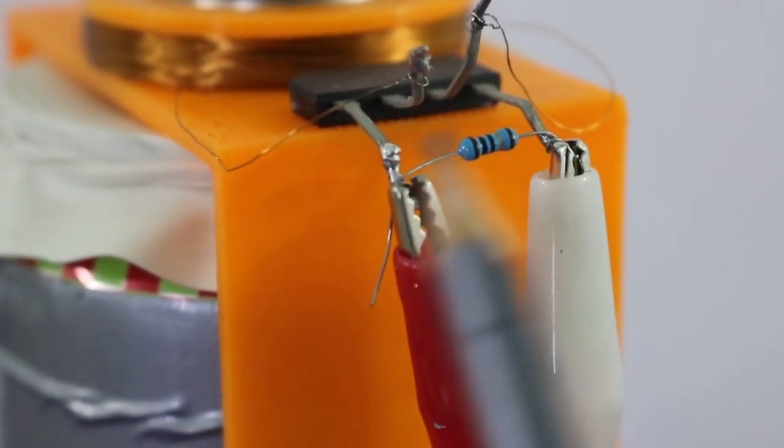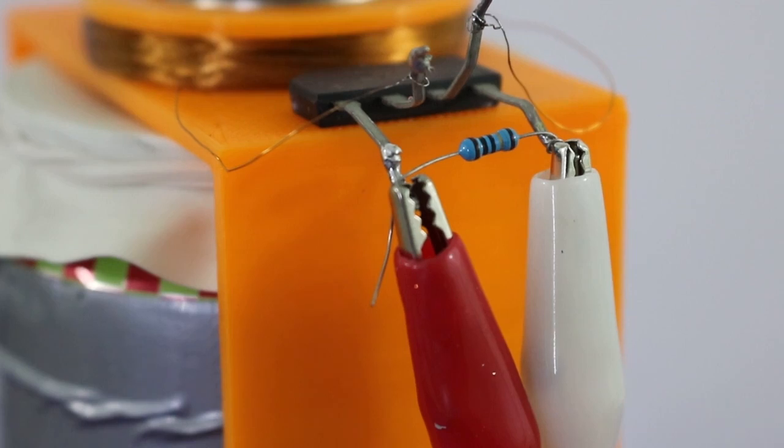Here we have the resistor at the output of the bridge rectifier and now with the engine in operation let's measure the voltage again and calculate the power.